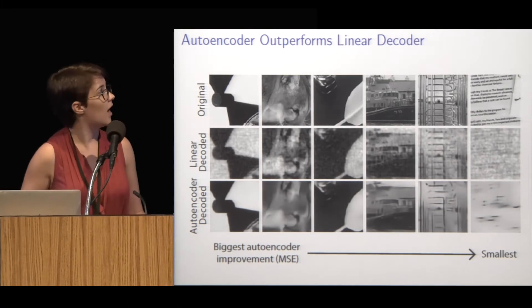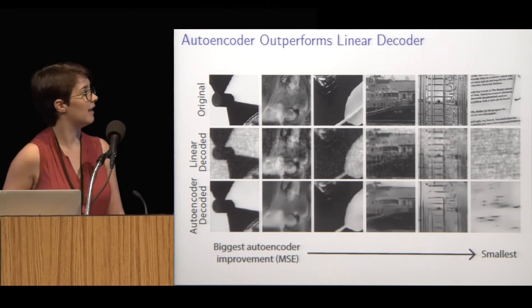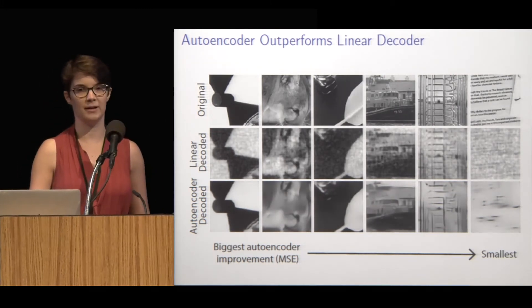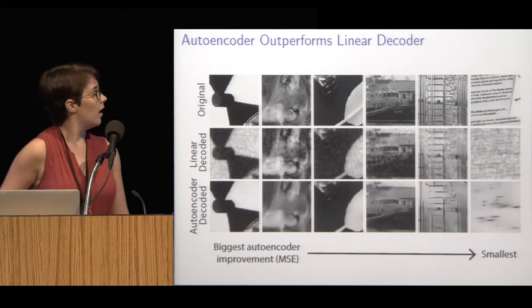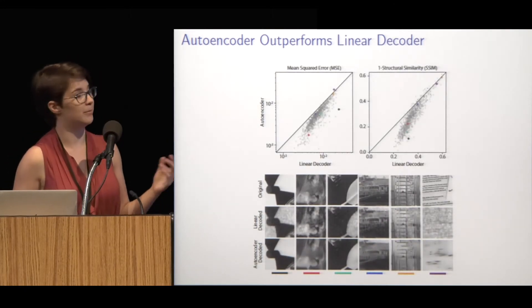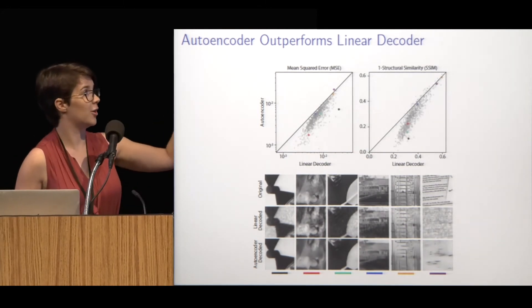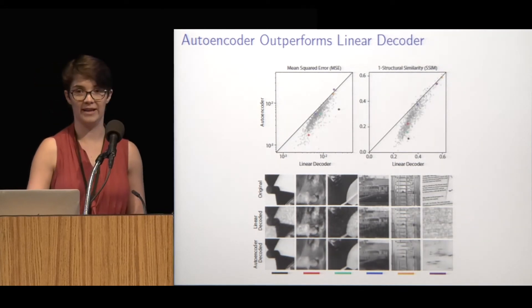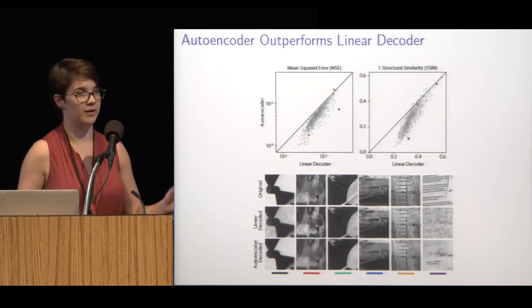These show the basic results. The top row is the original images that we trained on, the middle row is the linear decoded reconstructions, and the bottom row is the autoencoder decoded images. The linear decoded images are pretty good given how much information was in those neural responses, but the autoencoder does enhance and denoise these images. That perceptual observation is borne out by a couple metrics: pixel-wise mean squared error — which is the loss function we trained on — shows that almost every image, across a thousand images, is better for the autoencoder. And the structural similarity index, which gives a better measure of perceptual similarity, also shows almost every image is better using the autoencoder.